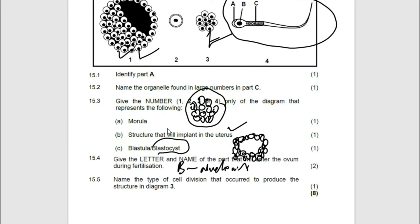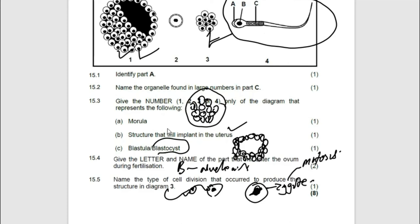Name the type of cell division that will produce structure number three. When you have a sperm and an ovum, the nucleus of the sperm and the nucleus of the ovum fuse to form a zygote. This zygote undergoes mitosis repeatedly to form a ball of cells — the morula. The morula continues undergoing mitosis and starts to form a hole in the center, forming a hollow ball of cells which we call the blastula.